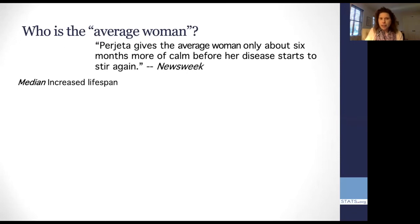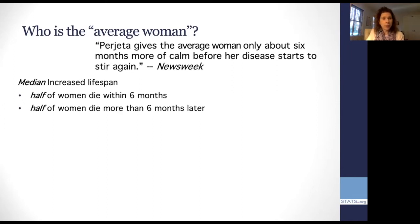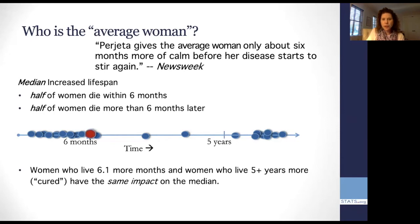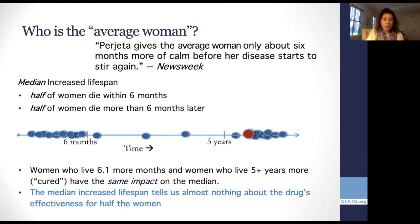But what do we mean when we talk about the average woman, that Newsweek claim? Well, we mean a median increased lifespan. So let's see what that means. If we said there was a median increased life of six months, that means that half of women are dying within six months, despite starting this drug, but half of them lived for more than six months. Well, let's put up some fake data. I just invented this data. I don't have the actual original data. But I have these dots representing the amount of time that the women had more, thanks to the medication, than they would have otherwise. And I put it on this graph like this. And what we found was that women who live 6.1 more months, so that's past the six month mark, and women who live five or more years more, and those are considered cured, they actually have the same impact on the median. Which is to say that the median increased lifespan actually tells us almost nothing about the drug's effectiveness for half of the women.